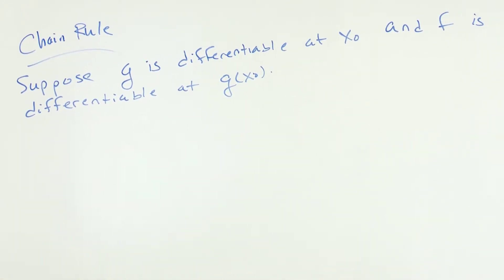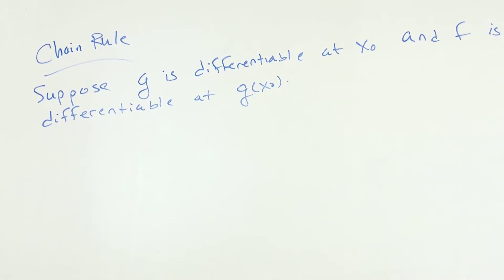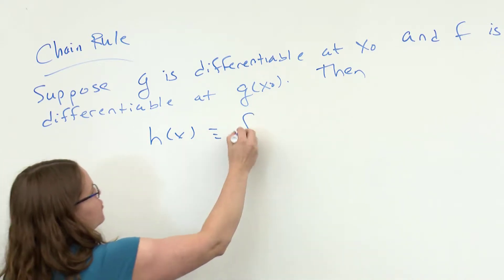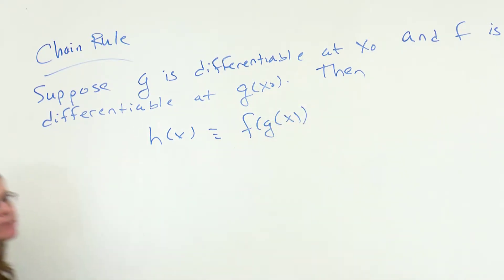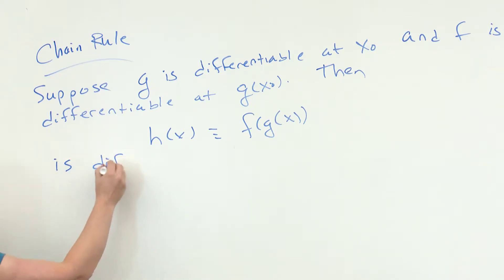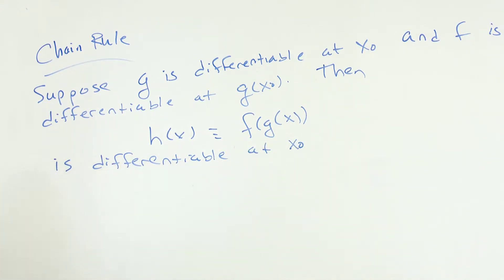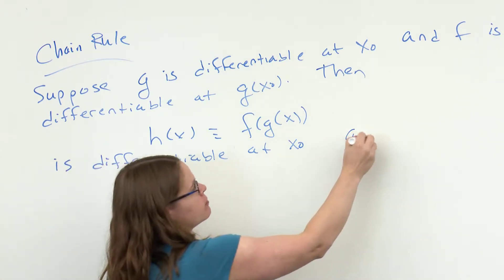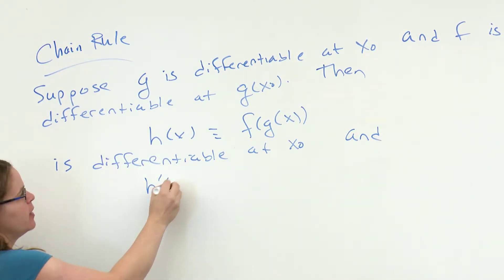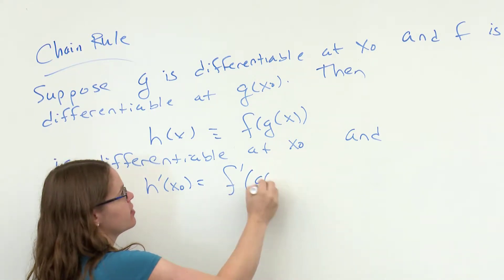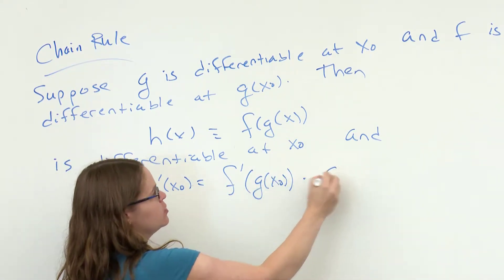This is similar to the hypotheses we had when we were doing composition of functions and taking limits. We take the composition and define h(x) = f(g(x)). The theorem says this function is also differentiable at x₀, and the chain rule tells us h′ equals f′ evaluated at g(x₀), times the derivative of the inner function g′(x₀).